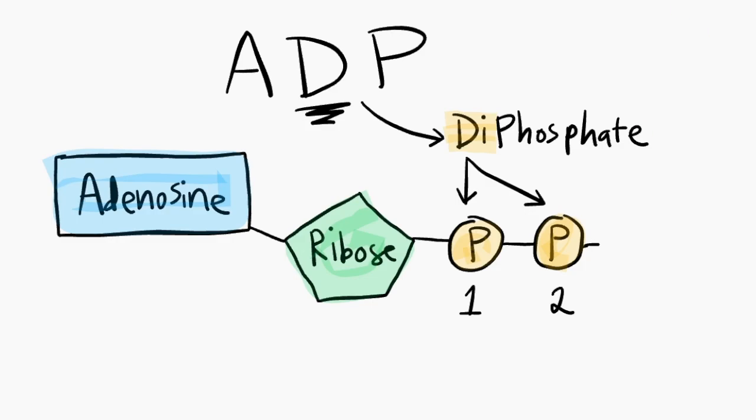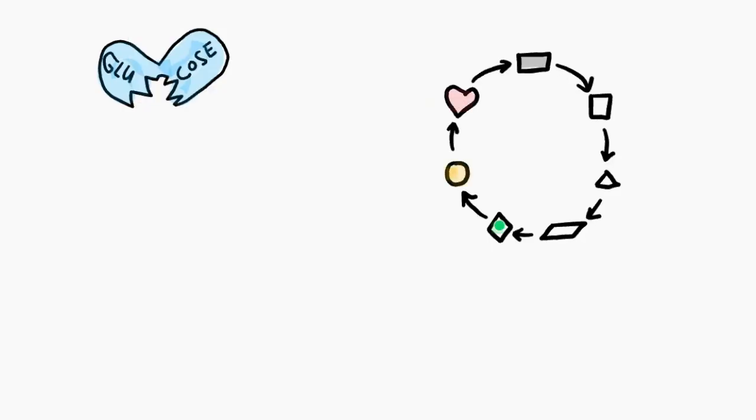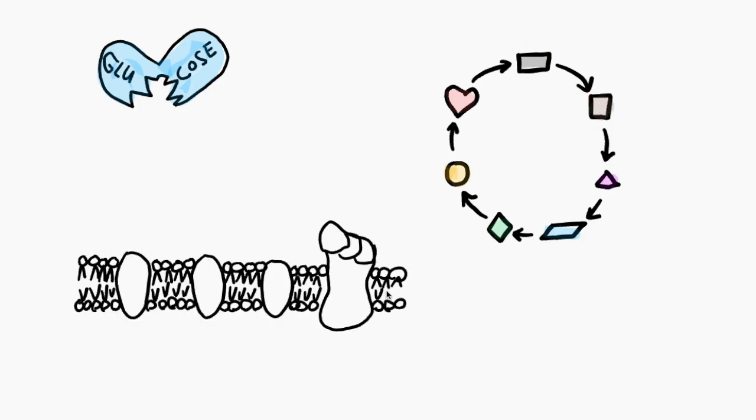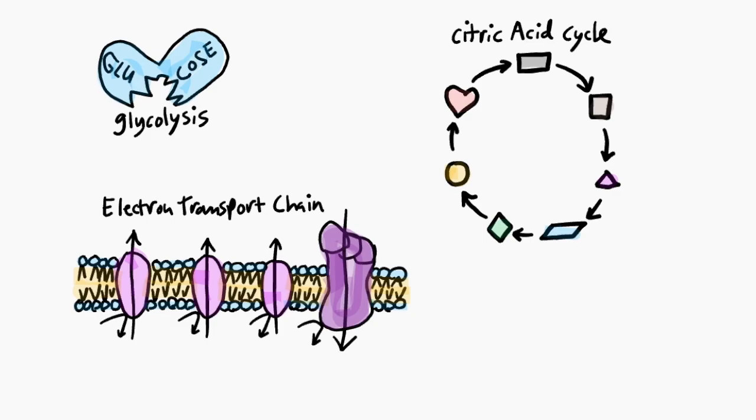So how does our body create ATP? Cellular respiration happens in three pathways. The breaking down of glucose is known as glycolysis. The Latin word lysis stands for degradation. Then the pathway moves onto the citric acid cycle, and finally to the electron transport chain. Each of these pathways has its own separate way of making ATP.